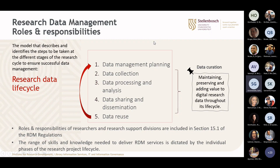When we talk about the research data life cycle as the model that describes the steps to be taken in the different stages of research, we always start with data management planning — that is where the data management plan comes in — and all research projects at the university must now have a research data management plan. We then go to data collection, then process and analyze the data in the third step, then the data will be published or shared in some way, and then the data can be reused. Throughout the life cycle, data curation takes place, which involves maintaining, preserving, and adding value to the research. In Section 15 of the regulations, the roles and responsibilities of researchers and research support divisions are set out, and the range of skills and knowledge needed to deliver services is dictated by the phases of the life cycle.